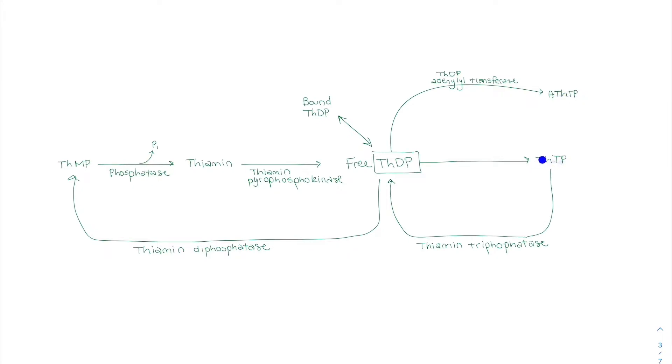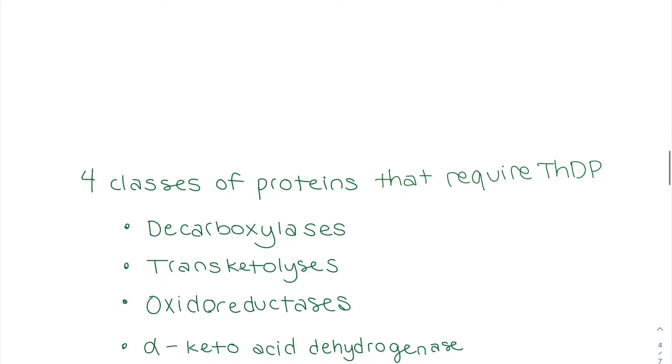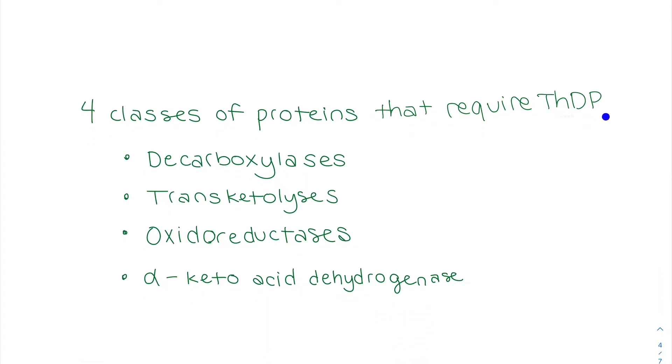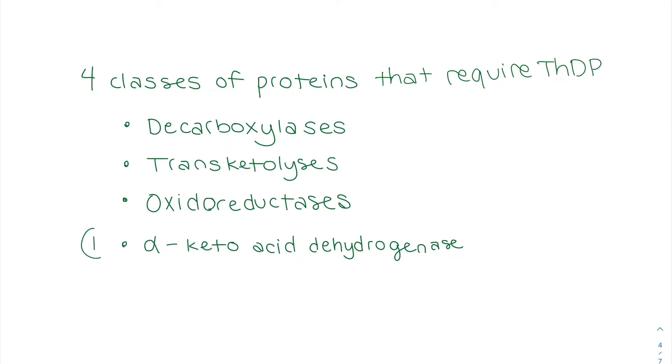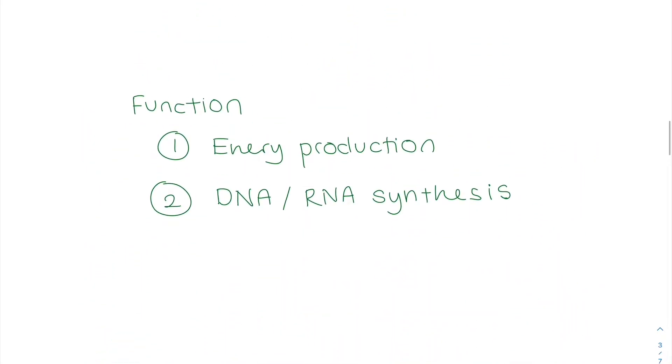So now I want to talk about these four classes of proteins that require the cofactor THDP. So we need it for decarboxylases, transketylases, oxidoreductases, and then alpha-ketoacid dehydrogenases. The two that I want to focus on, and I'm numbering these intentionally, is this alpha-ketoacid dehydrogenase and the transketylases. So I numbered it like this because they coincide with our functions, energy production and then DNA synthesis.